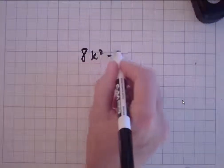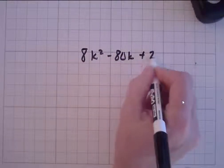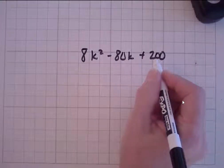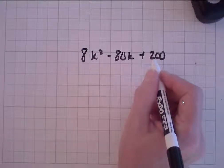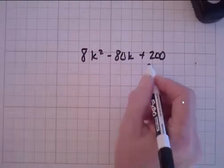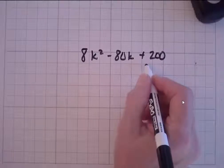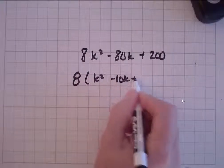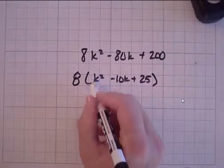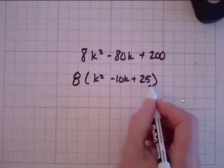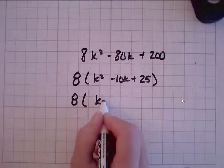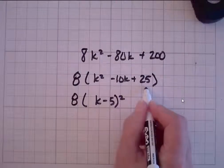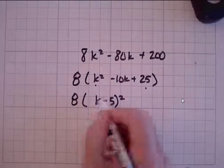Let's try another one that looks a little more complicated than it is: 8k squared minus 80k plus 200. The easiest way to factor this is to look at 8, 80, and 200 and ask yourself, do they have any factor in common? I know 8 and 80 can each have an 8 in common, but for 200: 200 divided by 8 is 25. So if I factor out an 8, I get k squared minus 10k plus 25. There's a 1 in front, which is a square number, and 25 is a square number. So it's going to be 8 times k minus 5 squared, because the square root of 25 is 5 and the square root of 1 is 1.